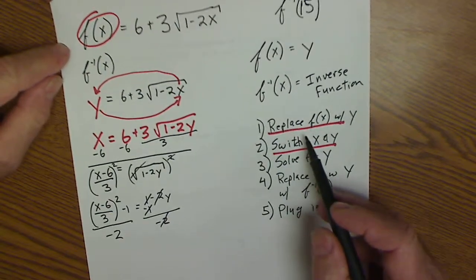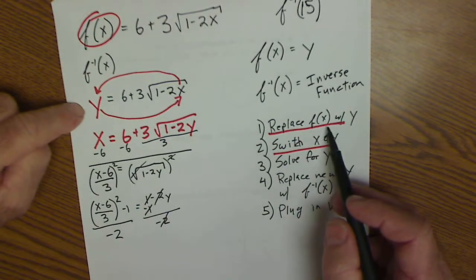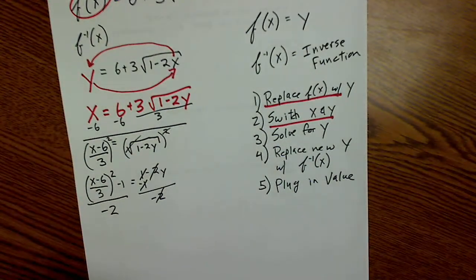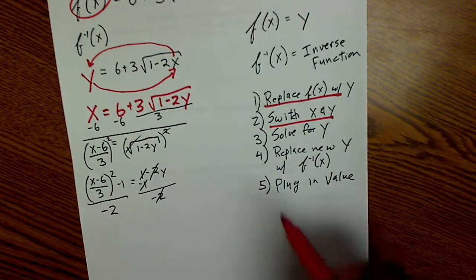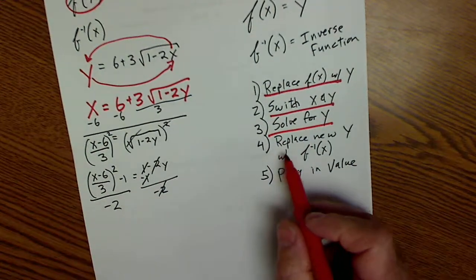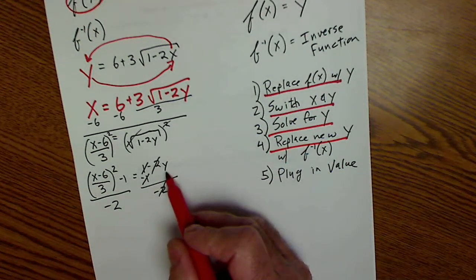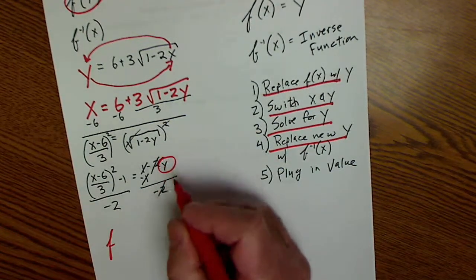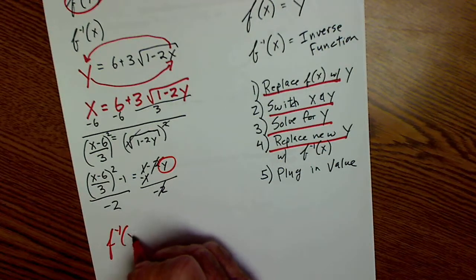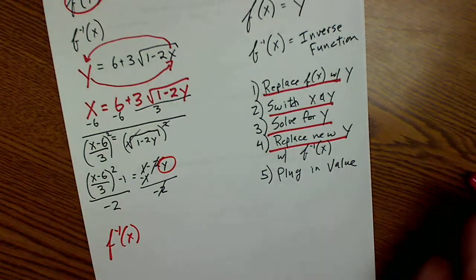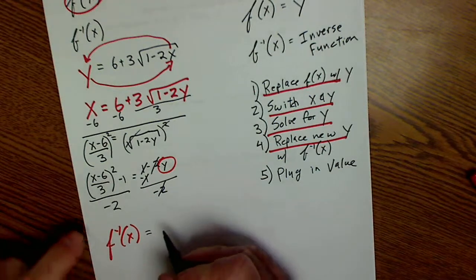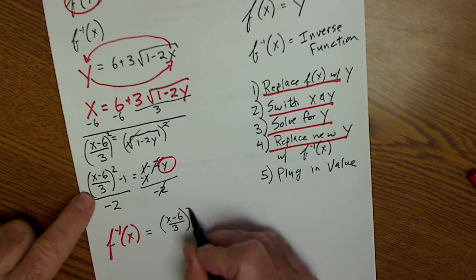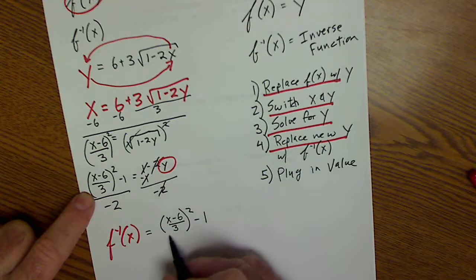Running through the steps: replace f(x) with y, switch x's and y's, solve for y — done. Now Step 4: replace the new y with inverse function notation. So f⁻¹(x) = ((x − 6)/3)² − 1, all divided by −2.